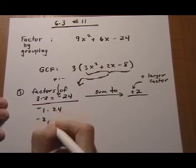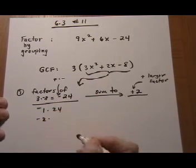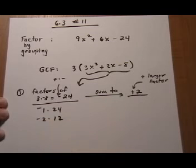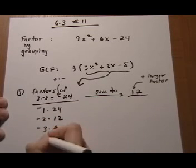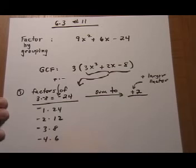And then I go up again, so minus 2 times 12, 3 times 8, so minus 3 times 8. Then 4 times 6 would be 24, so minus 4 times 6.